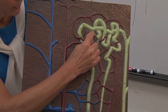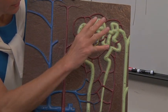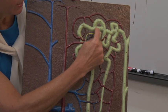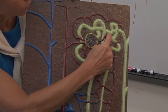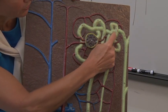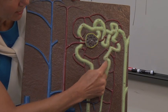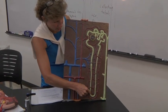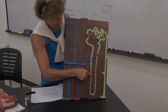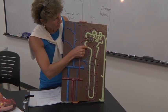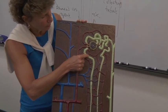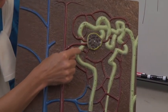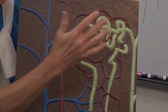So this Bowman's capsule that surrounds the glomerulus is going to catch all our filtrate, and then leaving that, you're going to have this curly tubule known as the proximal convoluted tubule, and it goes down into the descending loop of Henle, comes back up into the ascending loop of Henle.